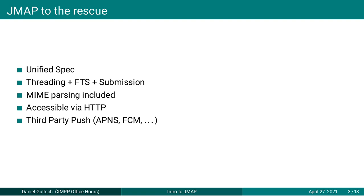Instead of getting a raw MIME block that you have to parse on the client, you get a pre-formatted JSON object with all the individual parts that make up the email. It's also accessible via HTTP, which makes it easier to write web clients — previously they always required some sort of proxy sitting between the website and the IMAP server. JMAP also has support for third-party push, where push notifications go through a third-party provider like Apple or Google. That's all built into the protocol.